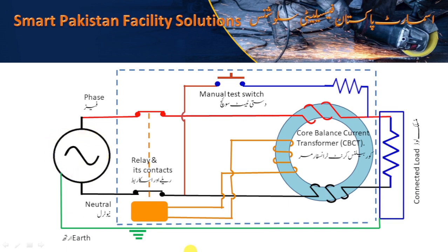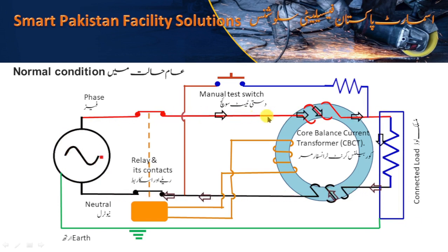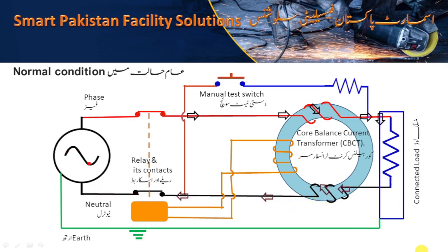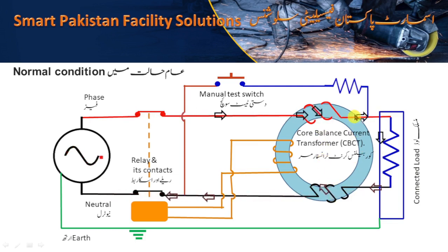Let us see how it works. The first scenario is normal working condition, in which everything works fine and there is no fault in the load. After switching on the power supply, current will start to flow from the phase wire to the load and return through the neutral towards the source. In this case, the current entering from the phase conductor will be equal to the current leaving from the neutral conductor, but the direction of both will be opposite.